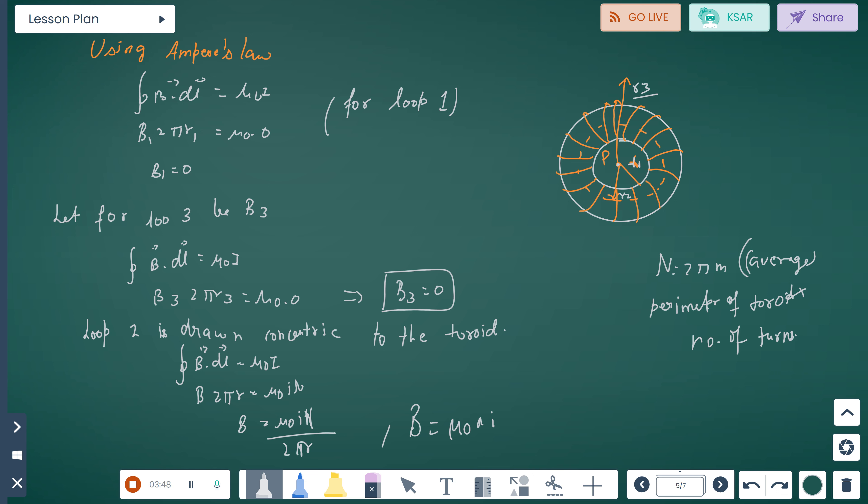Here n equals perimeter of toroid times number of turns. For loop 1, we take B₁. So ∮B·dl = μ₀I. B₁·2πR₁ = μ₀·0, then B₁ = 0. For loop 3, B₃ is also zero. Now for loop 2, it's drawn concentric to the toroid. So ∮B·dl = μ₀I. B·2πR = μ₀I·N. B = μ₀IN/2πR. So B = μ₀nI.